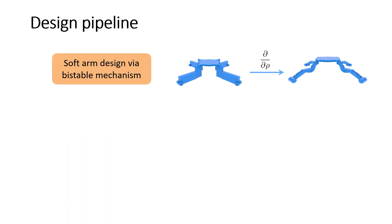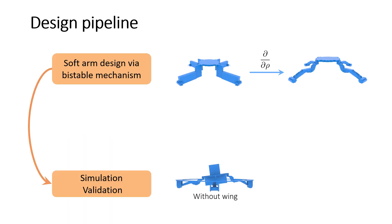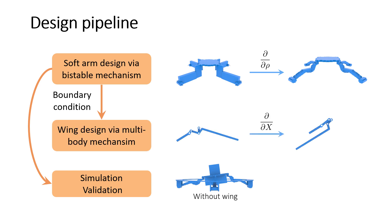The system without wings is then tested with dynamic forward simulations to validate that the designed system can function properly in practice. The rotations of the joints of the designed arms act as boundary conditions for the wing design. We reuse the differentiable equilibrium solver to optimize a multi-body rigid mechanism.